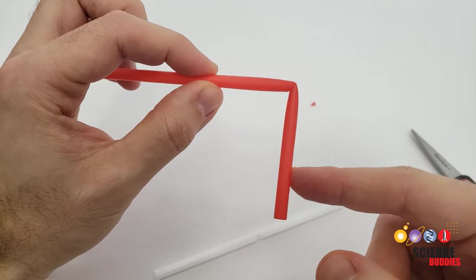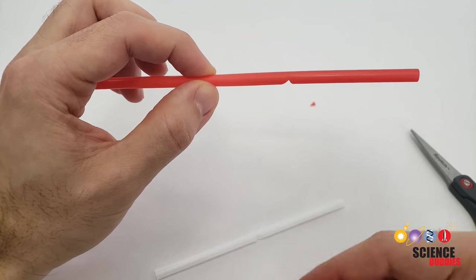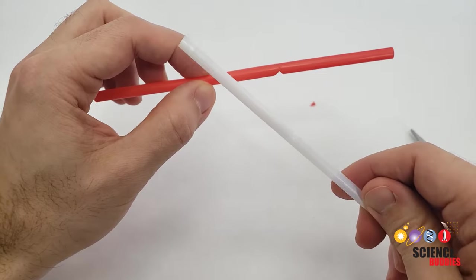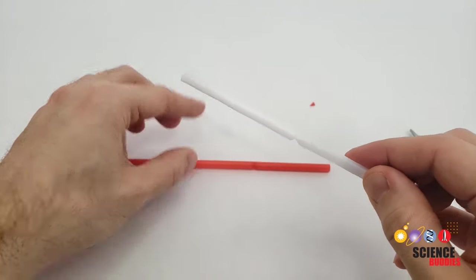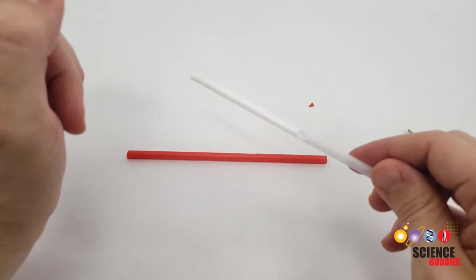You want to make sure that you can bend the straw easily, but that it will spring back to a straight position when you release it. You can try using plant-based or biodegradable straws to be more environmentally friendly, but make sure they bend and then spring back into place without breaking.